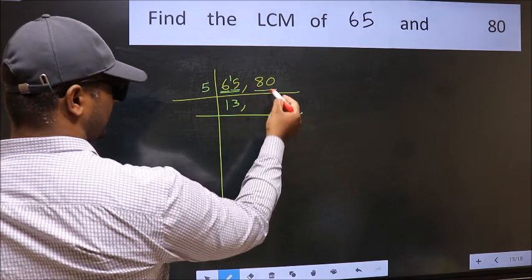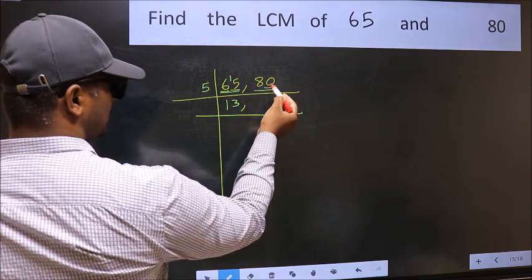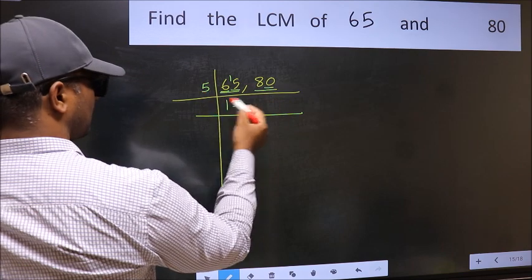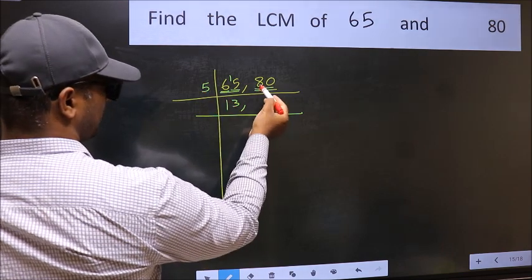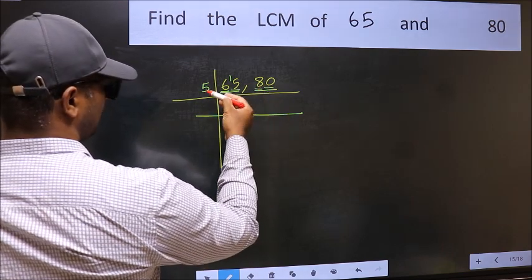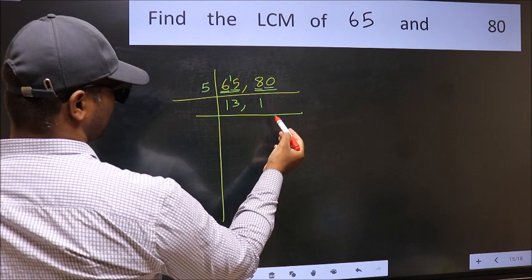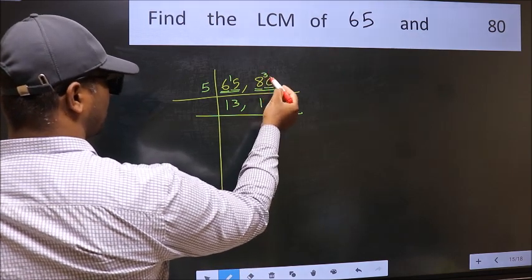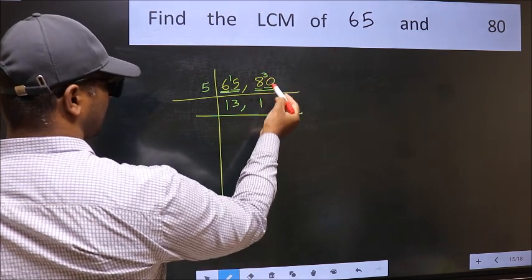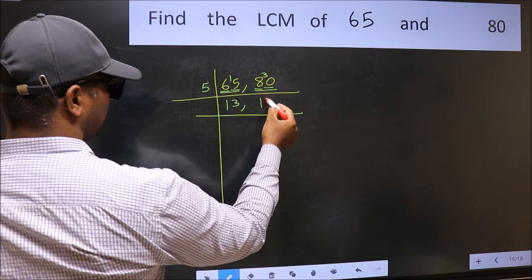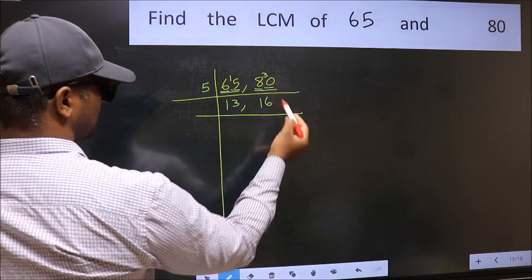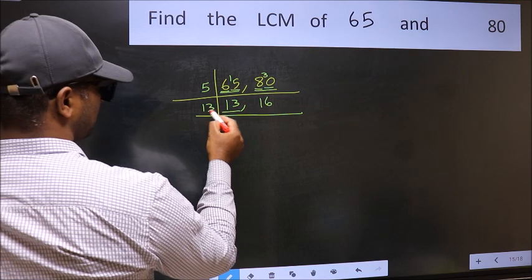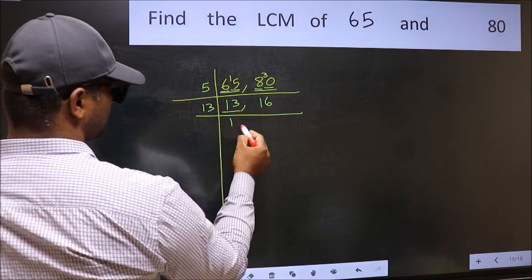The other number is 80. Last digit is 0, so it is divisible by 5. First digit is 8; a number close to 8 in the 5 table is 5 once 5. 8 minus 5 is 3, carried forward gives 30. 5 sixes are 30, so 80 divided by 5 is 16. Now here we have 13 on the quotient side. 13 is a prime number, so 13 once 13.